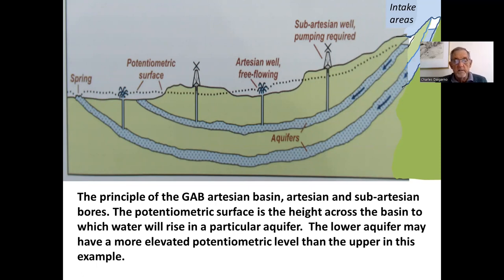The principle of the Great Artesian Basin — artesian and sub-artesian bores as shown here — relies on the potentiometric surface, which is the height across the basin where water will rise from the particular aquifer.